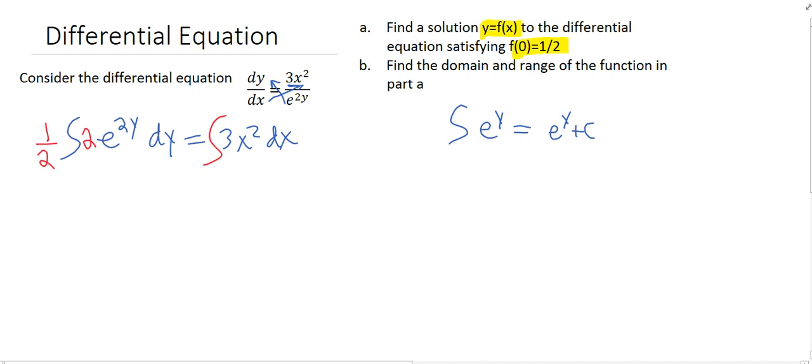3x² is good to go. We don't have to worry about any kind of substitution there. So let's go back to integration here. The integral of this would be 1/2 e^(2y). Remember, we're going to put our constant over here with the x's. Here you add 1, right? Add 1 to that, and you get 3/3 x³ plus your constant.